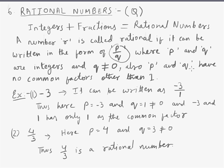This is necessary for a number to be called rational. Moreover, P and Q have no factors other than 1 in common. Example: minus 3, it can be written as minus 3 by 1. So here P becomes minus 3 and Q becomes 1, which is not equal to zero. Thus minus 3 and 1 have only 1 as the common factor. And this makes minus 3 a rational number.